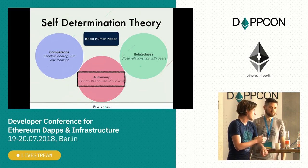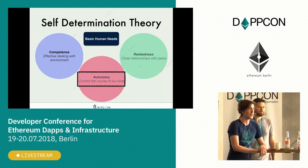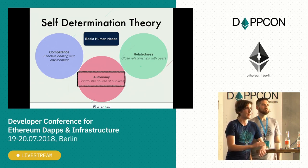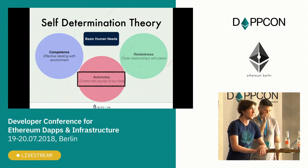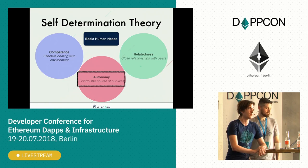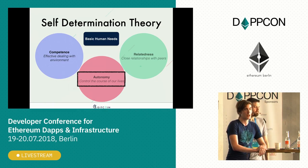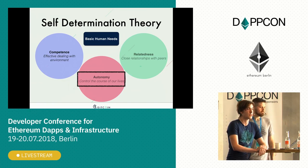This goes back to self-determination theory, which talks about what causes people to be intrinsically motivated — it comes down to three core concepts: competence, autonomy, and relatedness. We're really focusing on autonomy. We want to give developers the freedom to focus on tasks relevant to them, whether that's a full-time or part-time engagement, and they should be able to choose the amount of time they spend and fit that into their existing workflow.